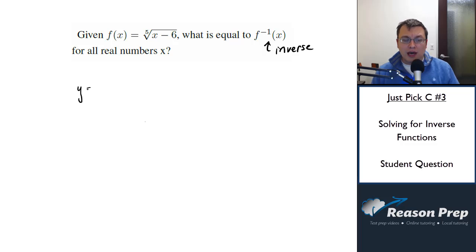The first thing you do is you write it with y. So you say y is equal to, in this case, the fifth root of x minus 6. And the first step to find your inverse is you switch the x and the y's. So I'm going to make this x is equal to the fifth root of y minus 6.